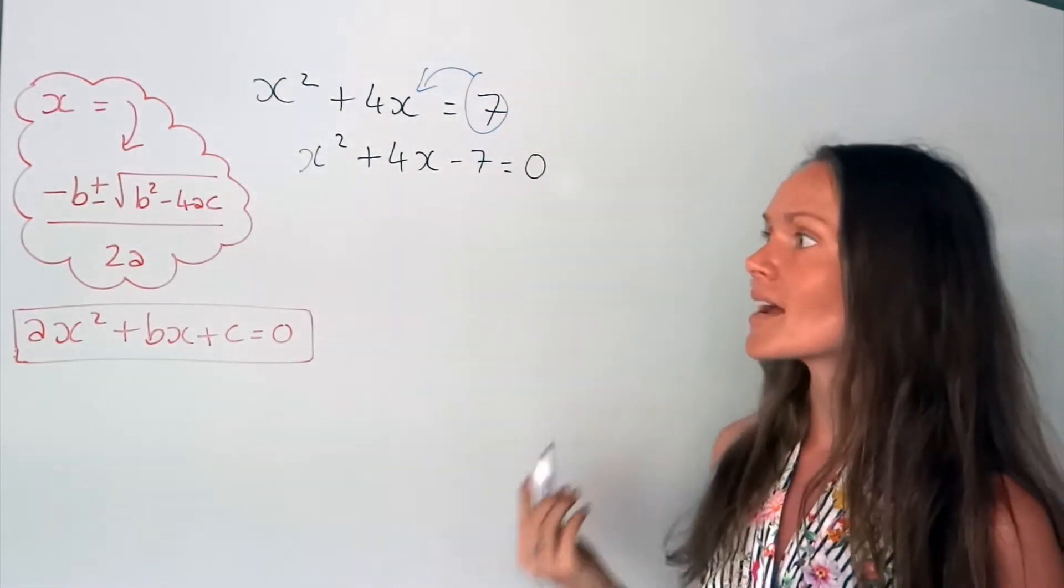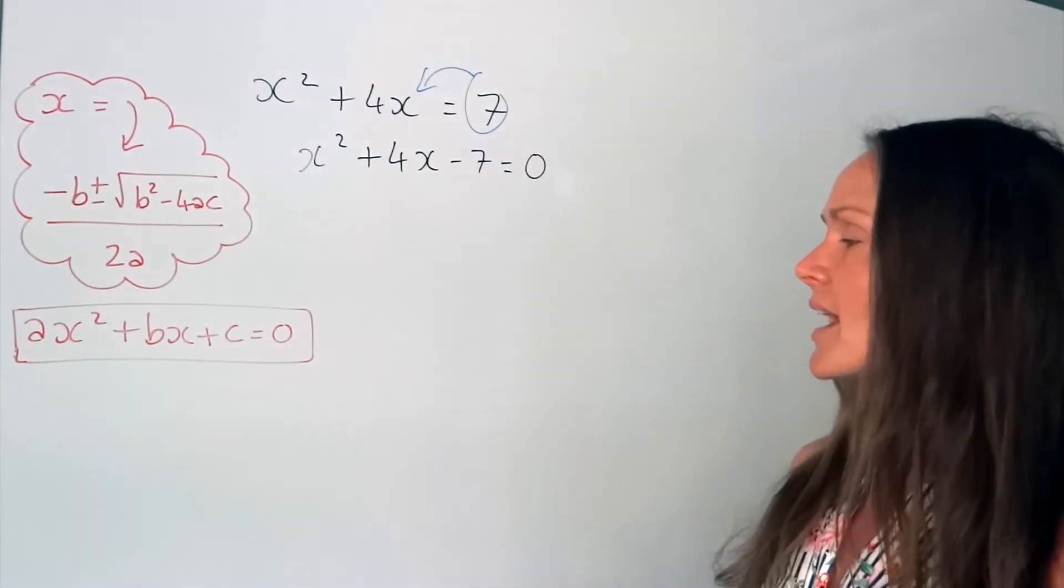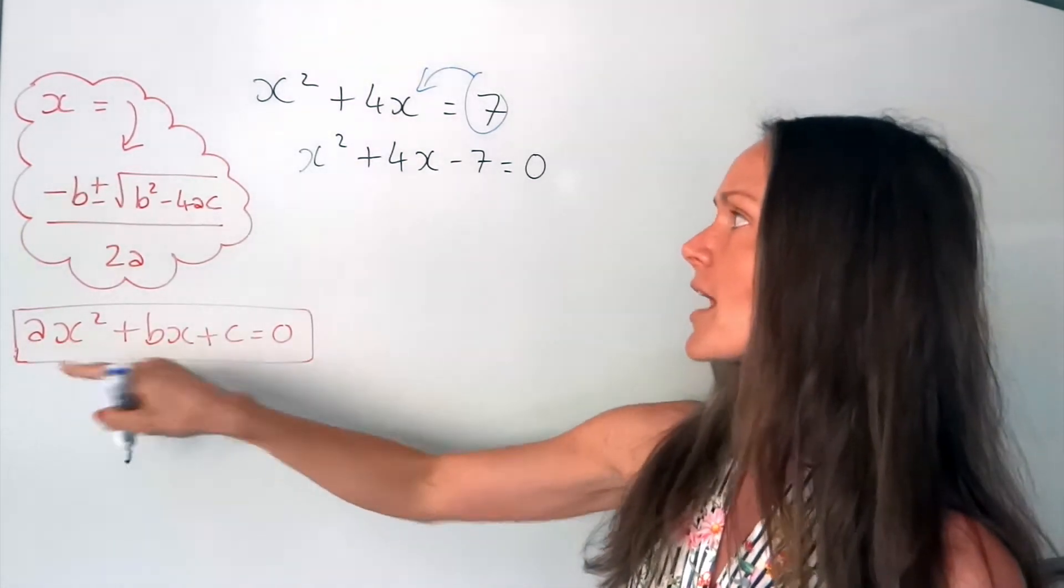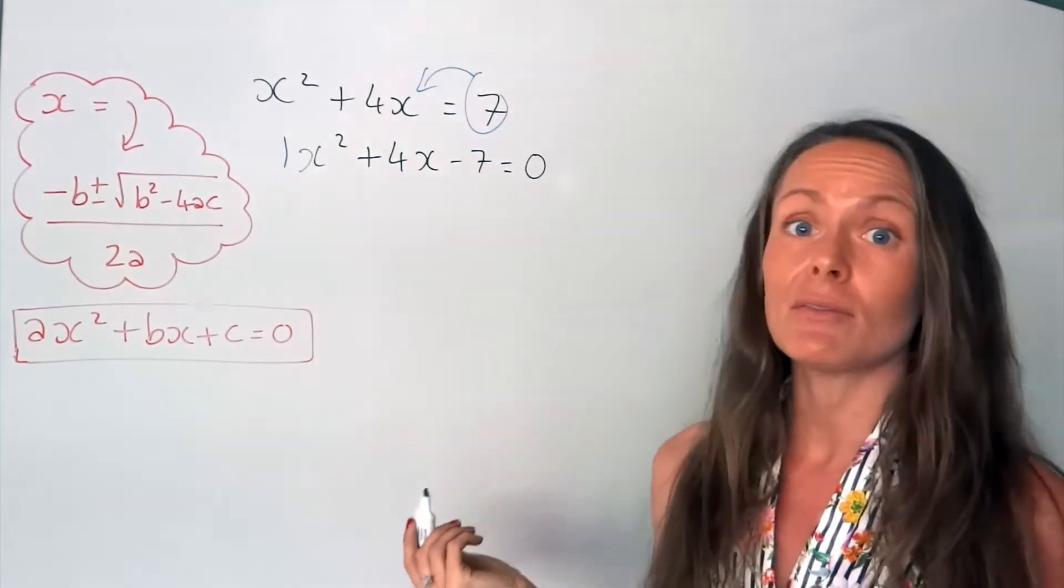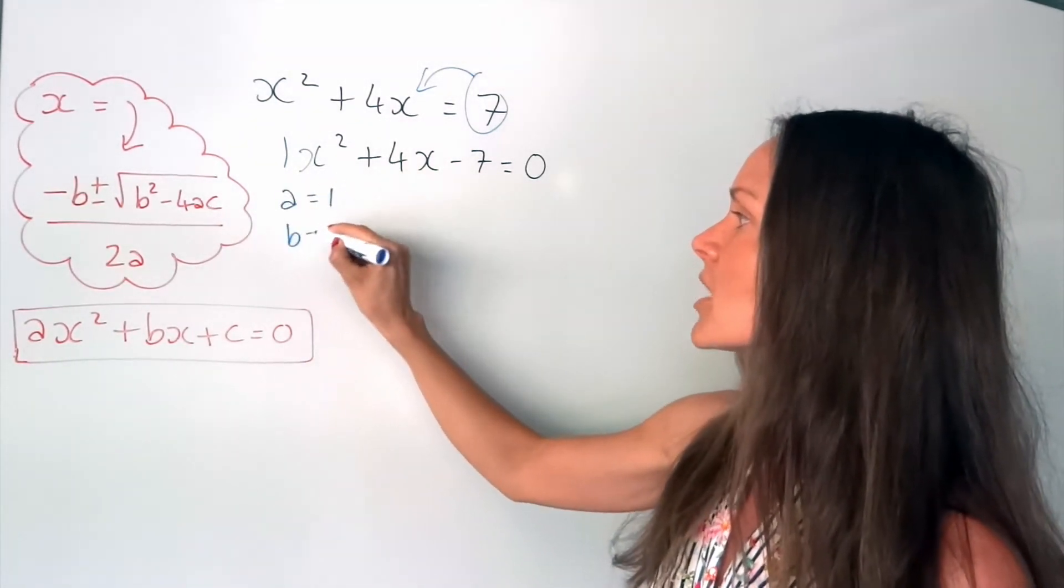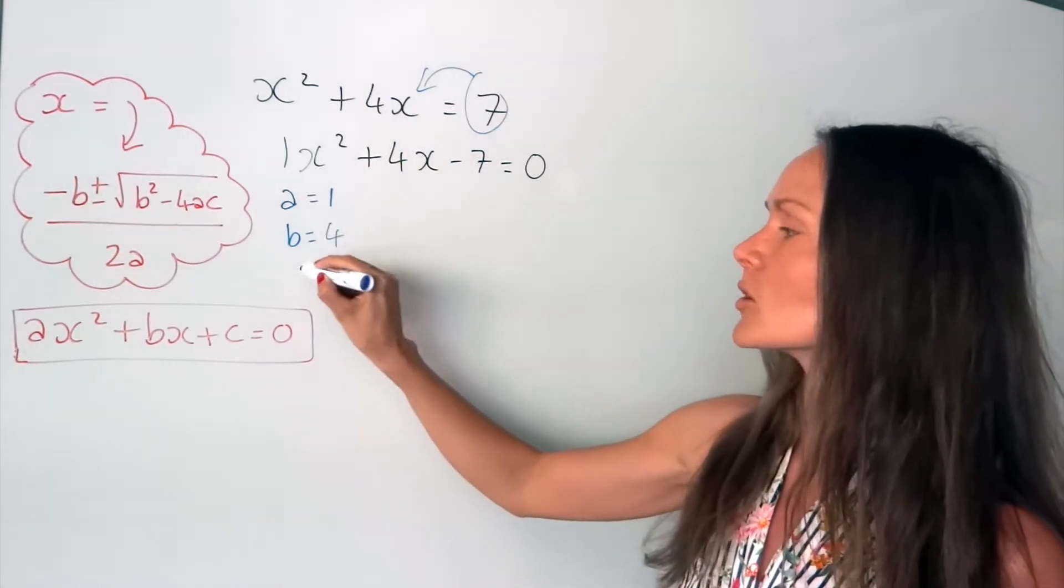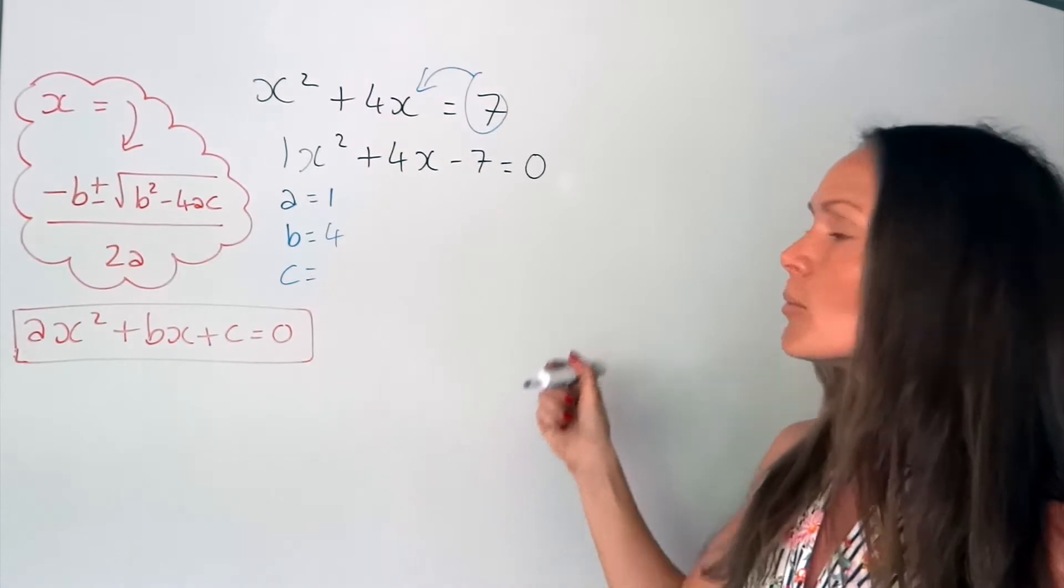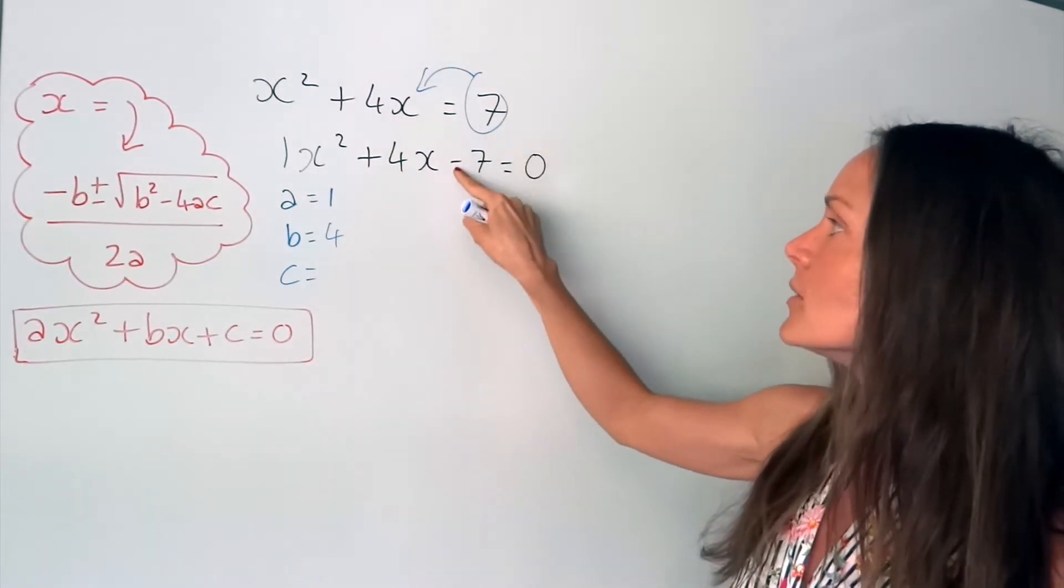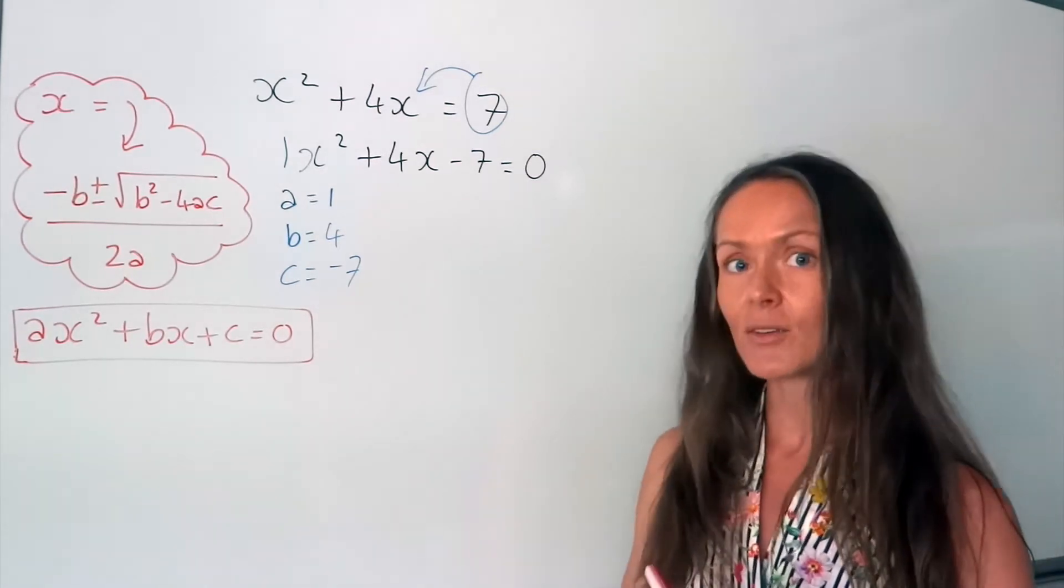Okay, so now let's identify our values a, b and c. So remember a is the number in front of the x squared, well here there's like an invisible one, so a is 1. B is the number in front of the x, so positive 4, don't forget to look at the sign. And c is the number by itself, which is this one, so negative 7.